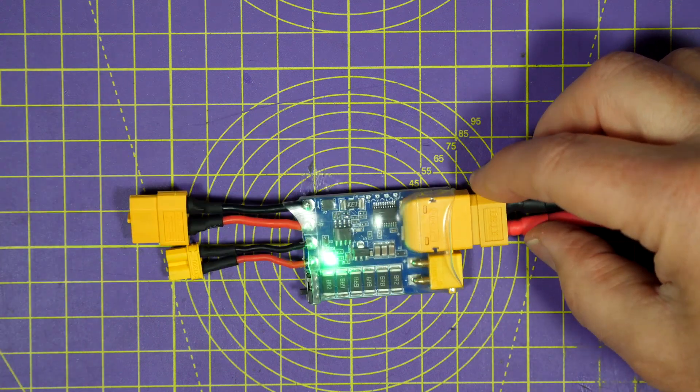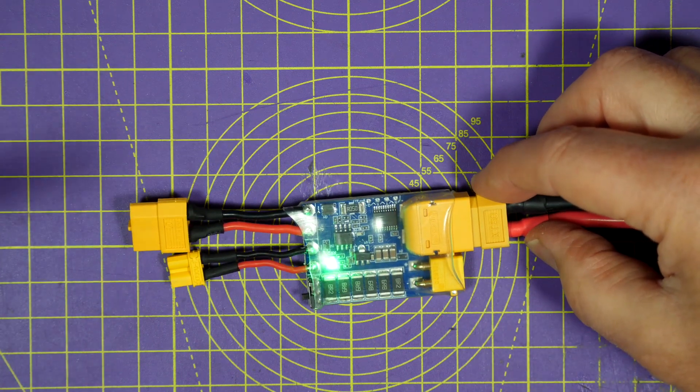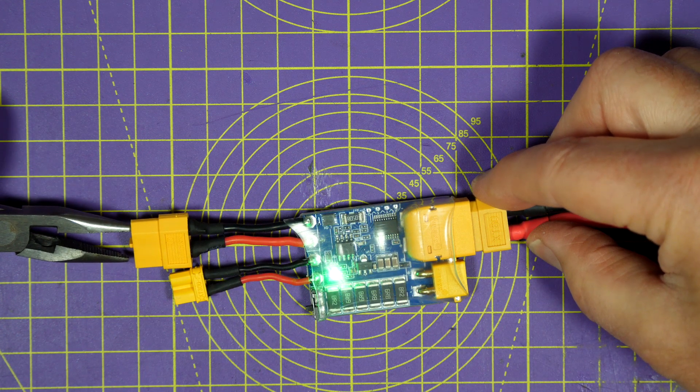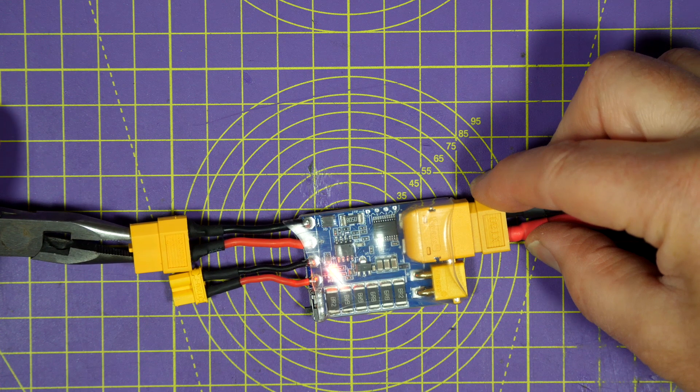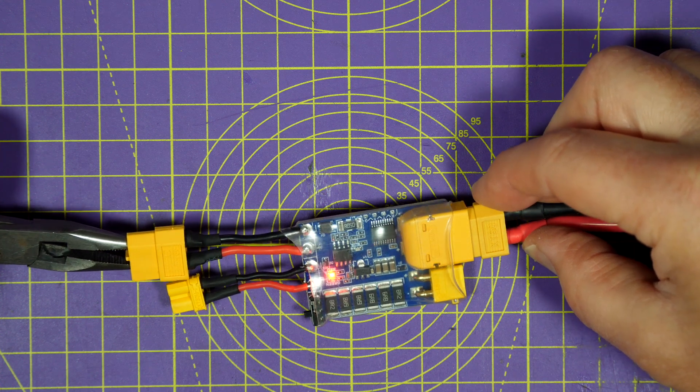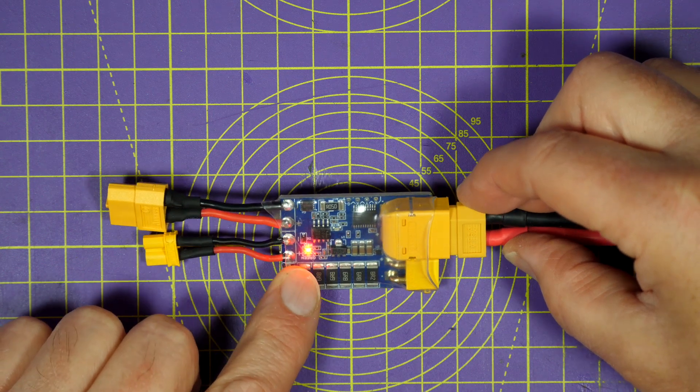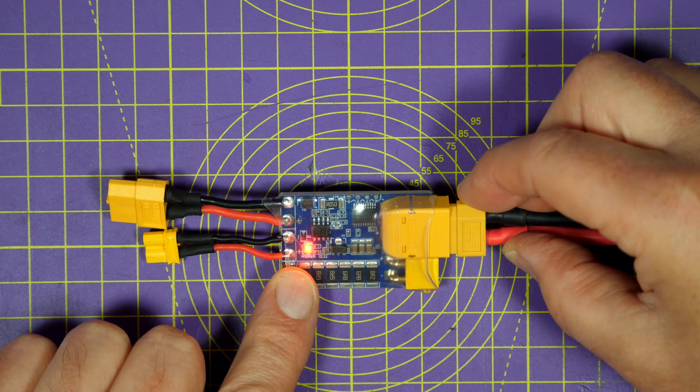Right. Now I'm going to put my brave pants on and just short this battery out. Ready. Steady. Nothing. No drama. It just works. And this red LED on here tells you there's been a short or an over current.